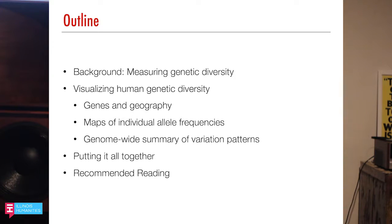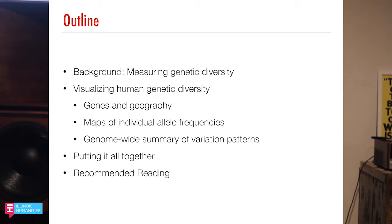Today I'm going to give a little background on how we measure genetic diversity and then talk about the main topic: visualizing human genetic diversity. This will be one long story — we'll talk about genes and geography, then maps of individual allele frequencies, then trying to get a genome-wide summary of all these variation patterns, and then put it all together. At the end I've got some recommended readings, some good approachable books you can go deep with.